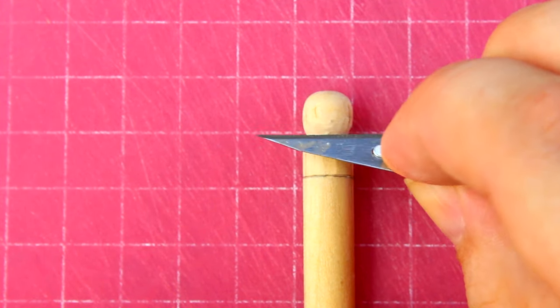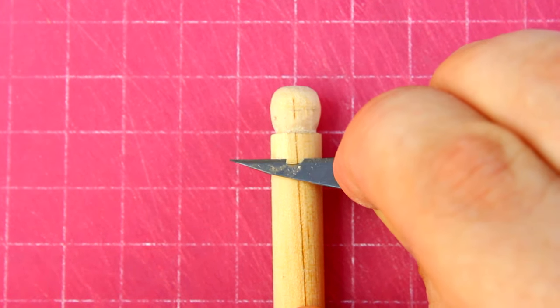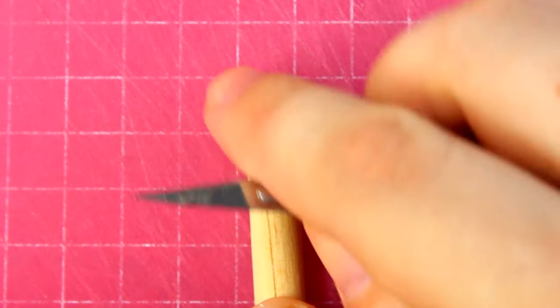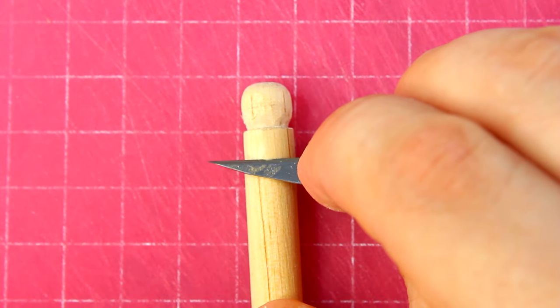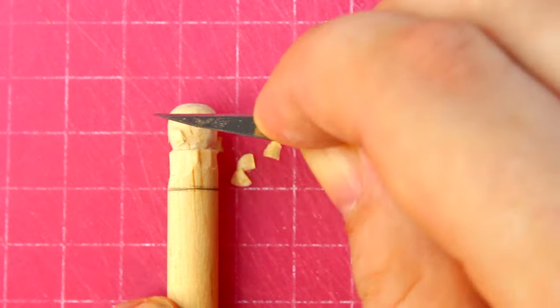I'm taking some pretty big chips off here and you can see the trouble I'm having. Not only am I having a hard time controlling the knife, I'm also having to push so hard that when I finish the cut, the knife is skipping ahead and cutting into my ball. So let's go back to making little cuts which are much easier to control.